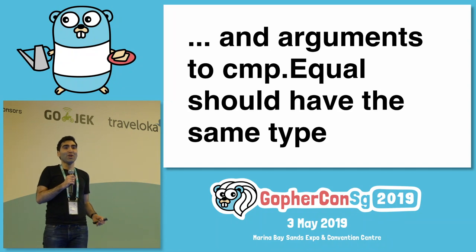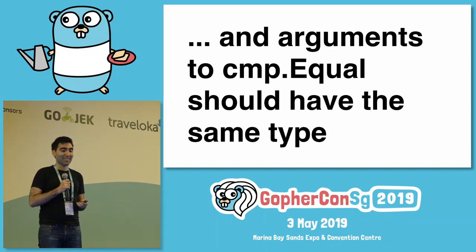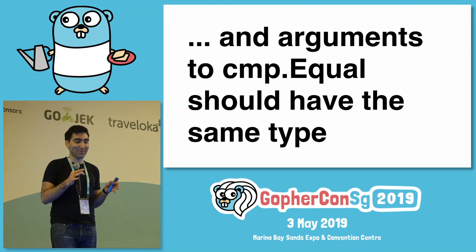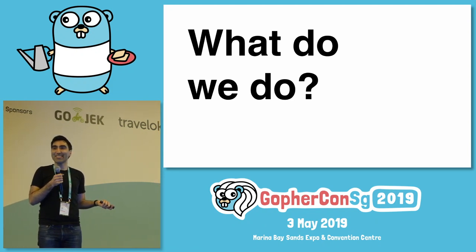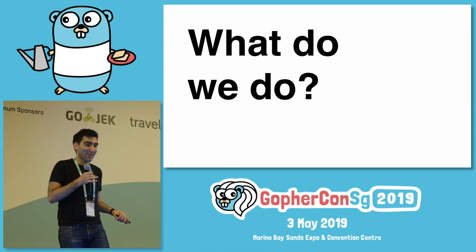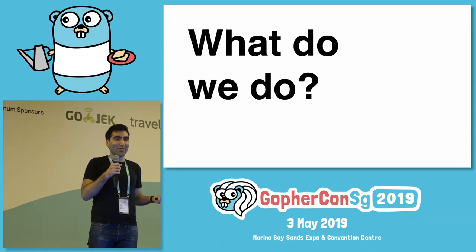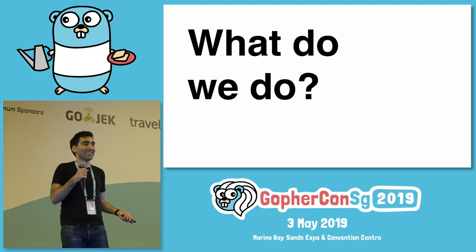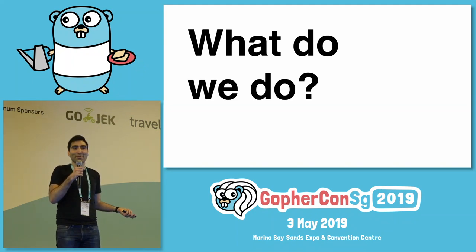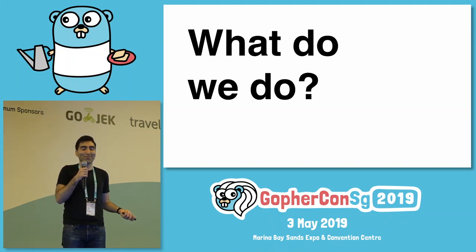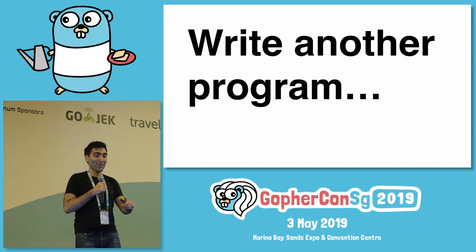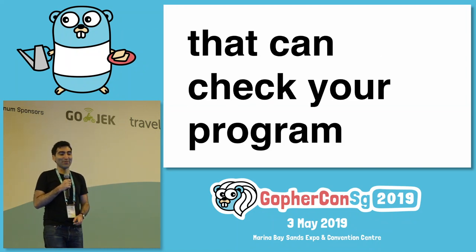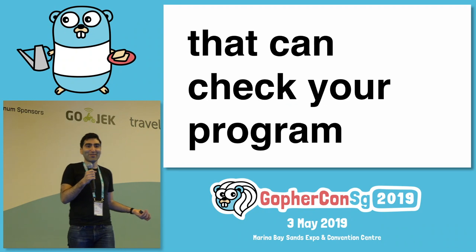Arguments to cmp.Equal always have to have the same type, including whether it's a pointer or not — it has to be exactly the same. So this kind of sucks. We wrote this code, ran our test, and saw an error message that was impossible to figure out. Well, I have a suggestion: we can write another program that checks our program and tells us if there's something wrong with it.